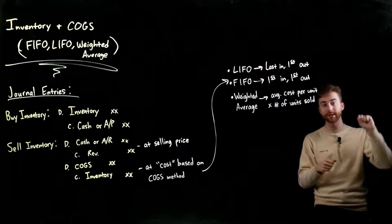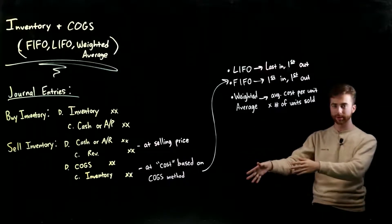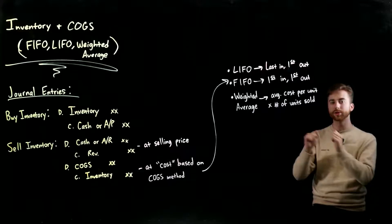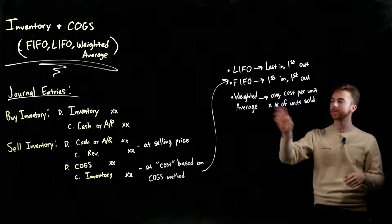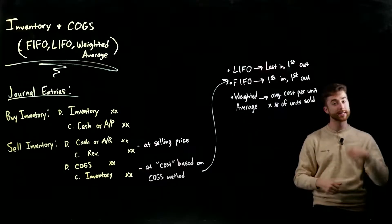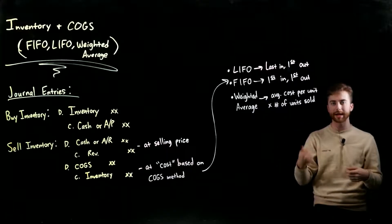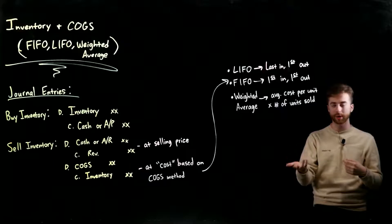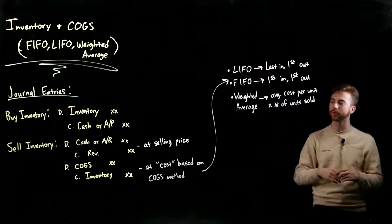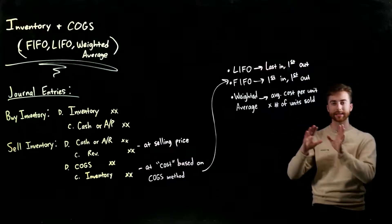You're essentially an intermediary between a supplier and a customer — buying inventory so you can sell it. It's when you sell to the customer that you recognize the expense, and the name of that expense is cost of goods sold. When you buy inventory, simply the inventory account increases and then you either decrease cash or increase accounts payable depending on whether it was a cash or credit purchase.